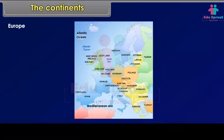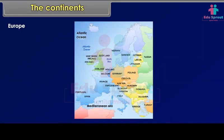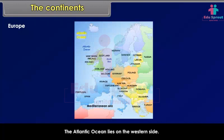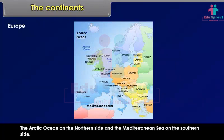Europe is the second-smallest continent. Water bodies bind it on three sides. The Atlantic Ocean lies on the western side, the Arctic Ocean on the northern side, and the Mediterranean Sea on the southern side.